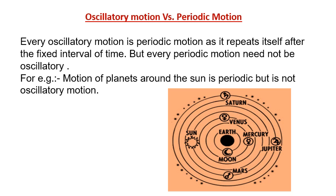Every oscillatory motion is periodic, as it repeats itself after the fixed interval of time. But every periodic motion need not to be oscillatory. For example, motion of planets around the sun is periodic but it is not oscillatory.